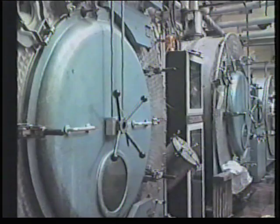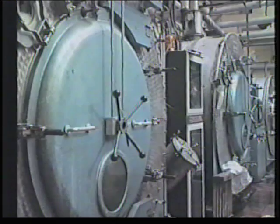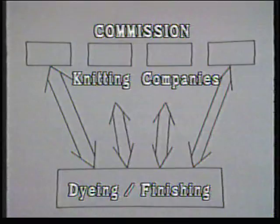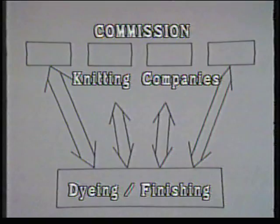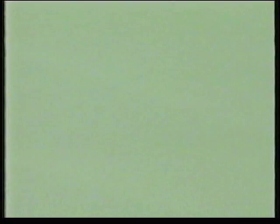We shall concentrate on dyeing and finishing of textiles in fabric and garment form, since these are carried out directly for knitters. Either by a dye house entirely under the control of the knitting company, known as a vertical operation, or by an outside specialist independent dyeing company servicing a number of knitters. These are known as commission dyers. In this video we shall deal briefly with the nature of the dyeing process and the preparatory processes, then with the machinery used for garment and fabric dyeing and after processes, and finally some comments on finishing.